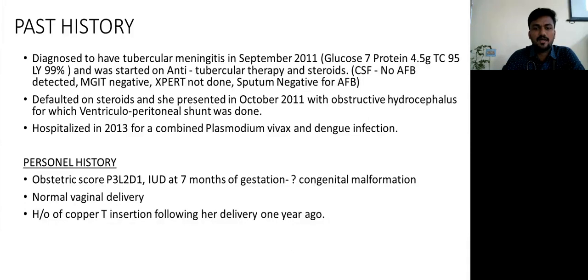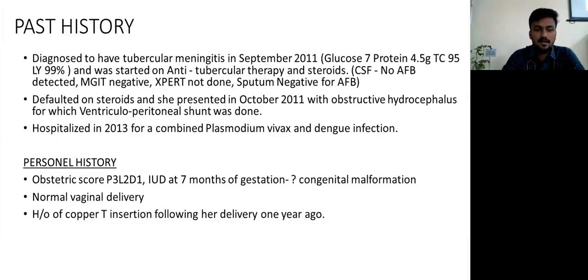She was later hospitalized once for combined Plasmodium vivax and dengue infection. Personal history: her obstetric score was P3L2 with one IUD at seven months of gestation, documented as congenital malformation in the fetus. Normal vaginal delivery, and she had a history of copper T insertion following her delivery one year ago.